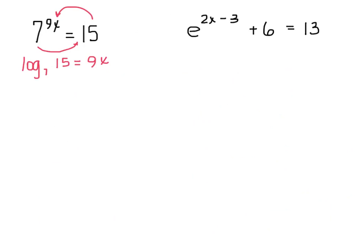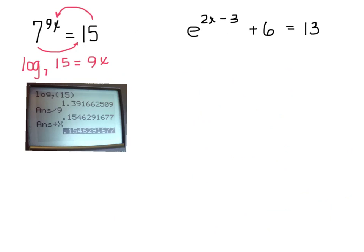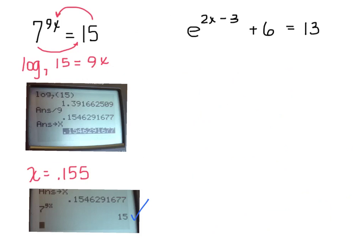We get log base 7 of 15. At this point I could write down that 1.392 equals 9x, but I don't want to round — straight from my calculator I divide by 9. My answer rounded to three decimal places is 0.155. If I store the full decimal as x and type in 7 to the 9x, it gives me 15, so x equals 0.155 is confirmed.